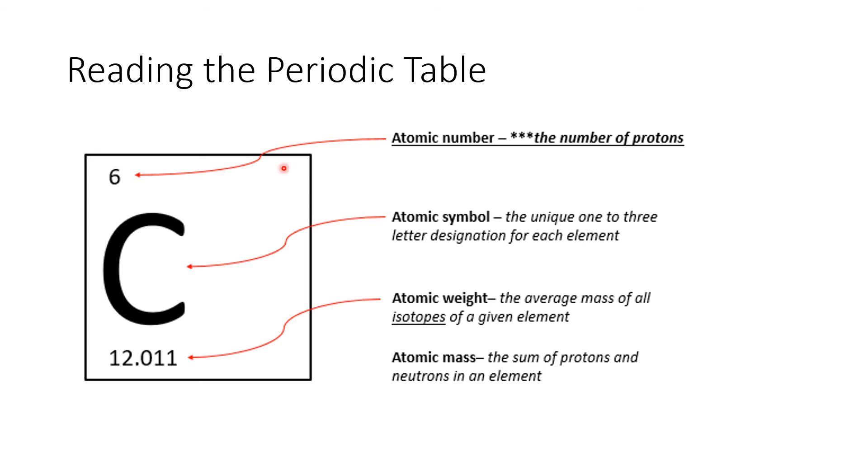This is one element from the periodic table. Happens to be carbon. C is the atomic symbol, which is a letter or sometimes two letters, to represent an element. The number on top of this atomic symbol is the atomic number. And this is a really important number.